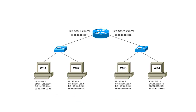Let's go ahead and start with the first example. When Workstation 1 needs to communicate with Workstation 2, Workstation 1 needs to know Workstation 2's IP address. However, to send the packets to Workstation 2, Workstation 1 also needs to know Workstation 2's MAC address.